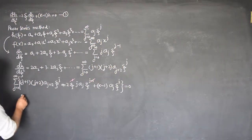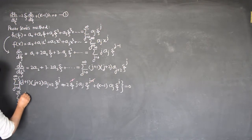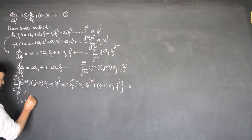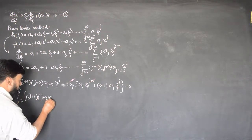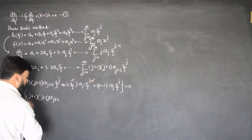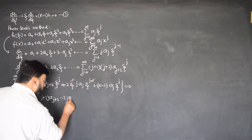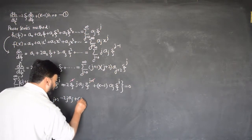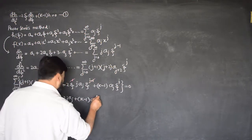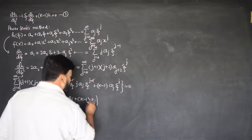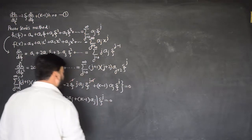I can write the summation with j running from 0 to infinity, and this will be (j+1)(j+2) a_{j+2}, minus 2j · a_j, plus k minus 1 · a_j, and ξ^j is common, equal to 0.